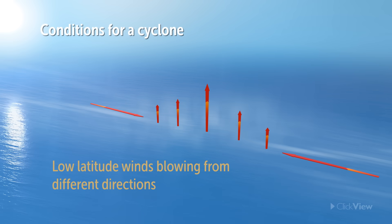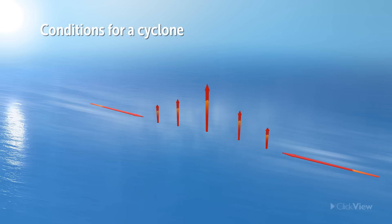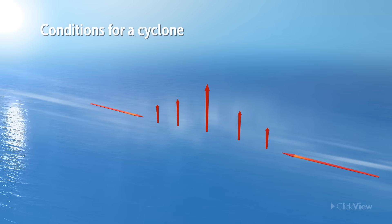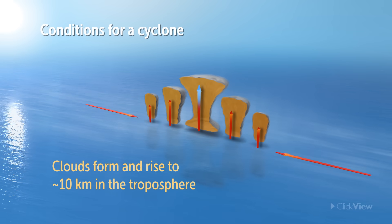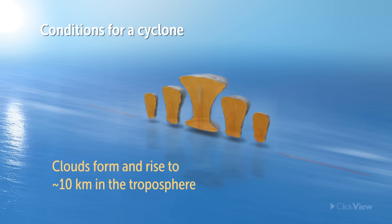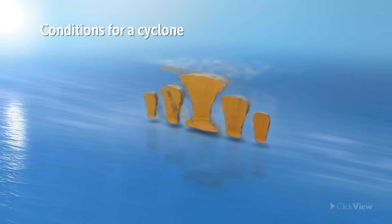The rising air contains huge amounts of moisture evaporated from the ocean's surface. As it rises, it cools, condensing to form huge clouds about 10 kilometers up in the troposphere. More warm air rushes in and rises, drawn by the draft above.